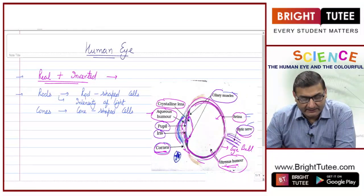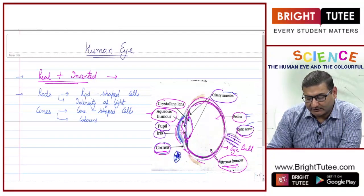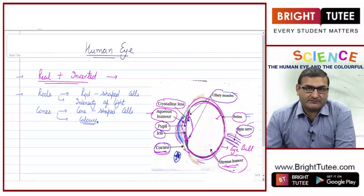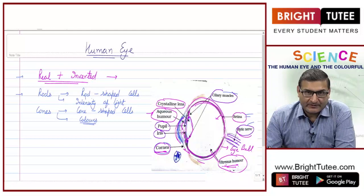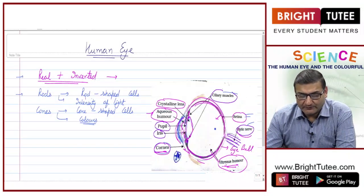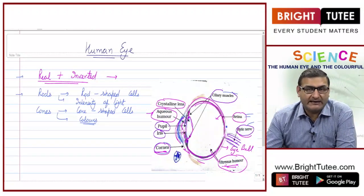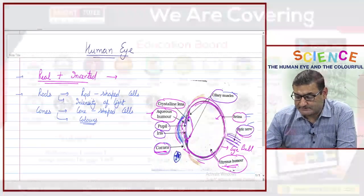And the cones respond to colors — whatever colors we are able to see is because of the cones. So I hope you have understood what a human eye is.